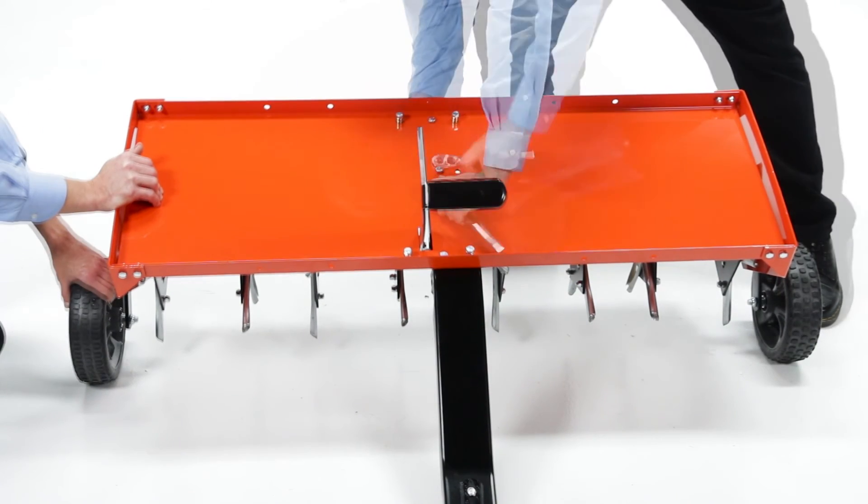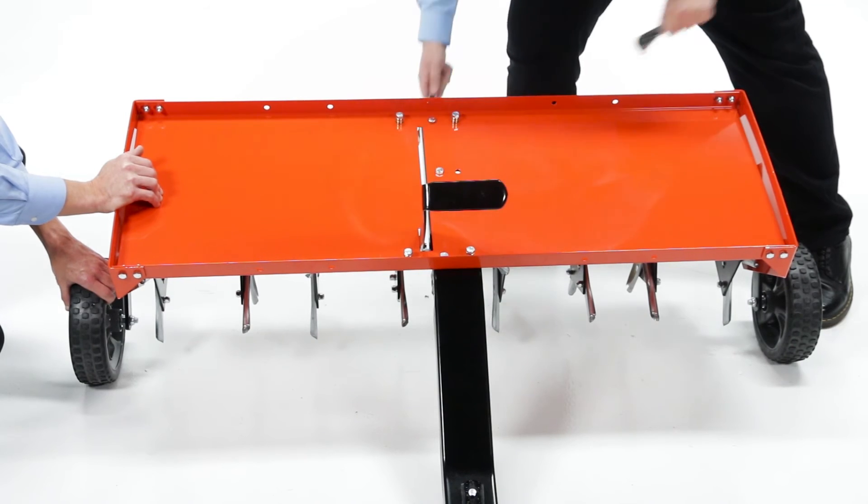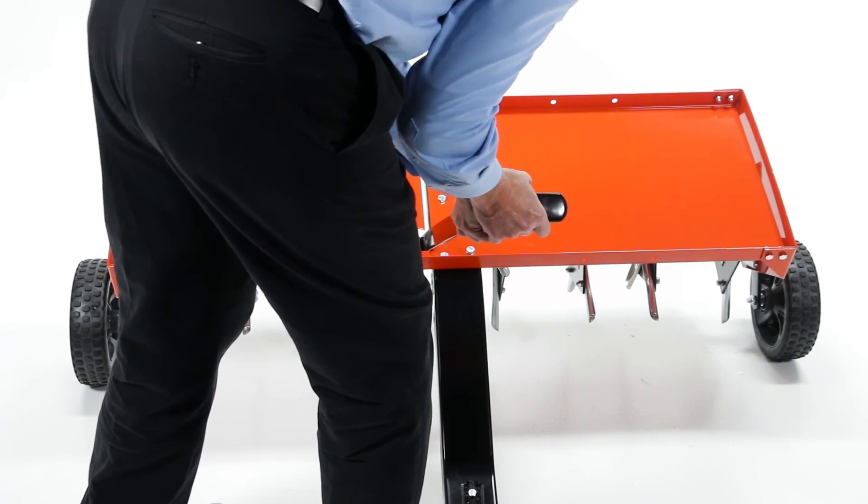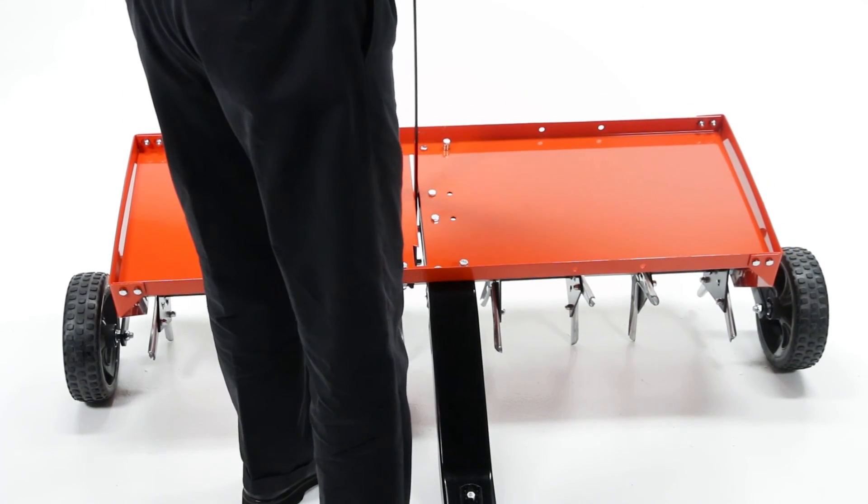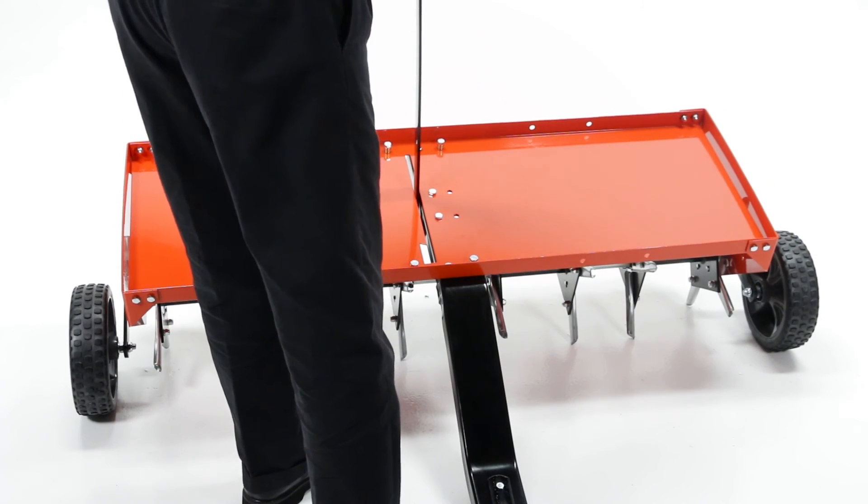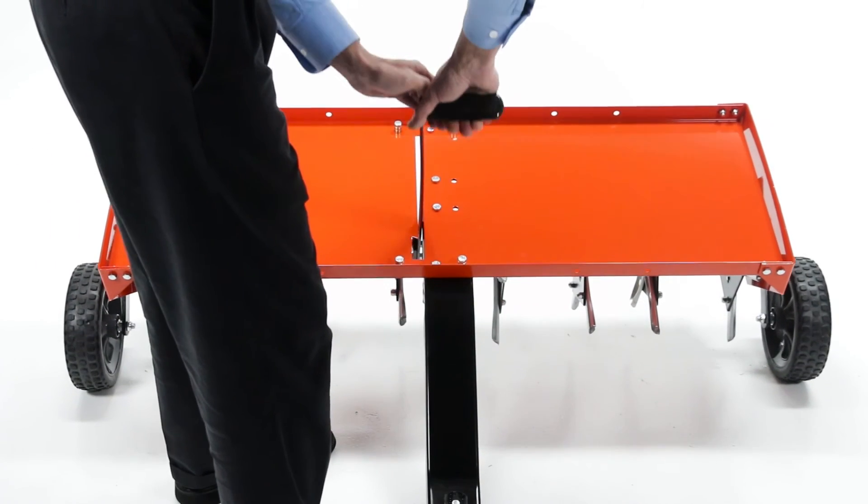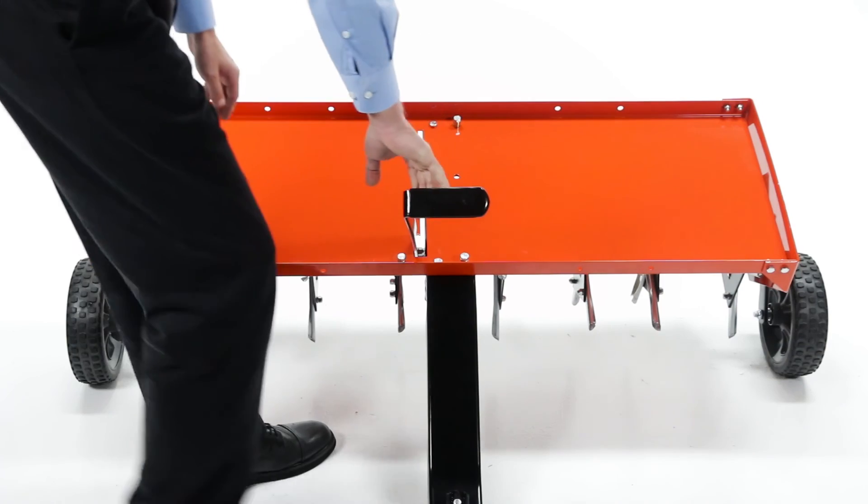Then, tighten the 2 bolts that fasten the middle brace to the tray. After performing these steps, some effort should be required to shift the lift handle from the transport locking notch over into the slot to lower the aerator. When the aerator is raised, the lift handle should spring back over into the transport locking notch.